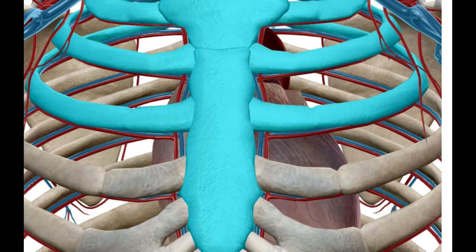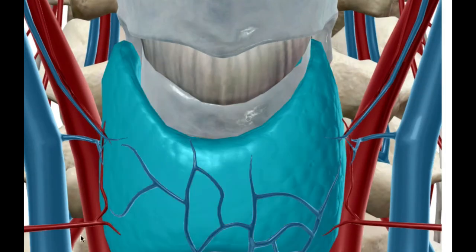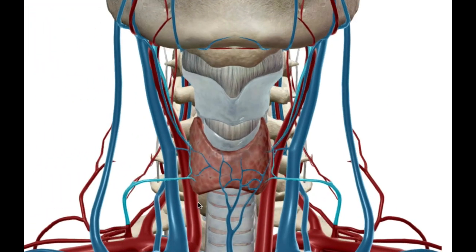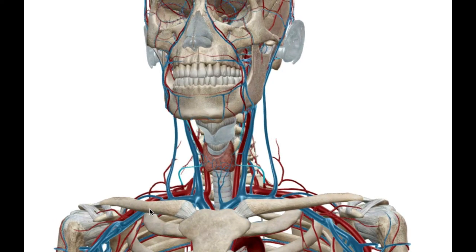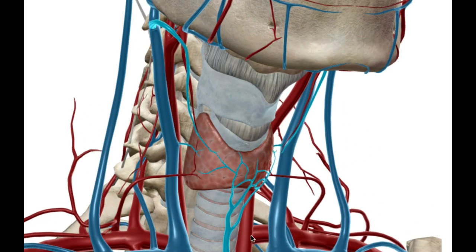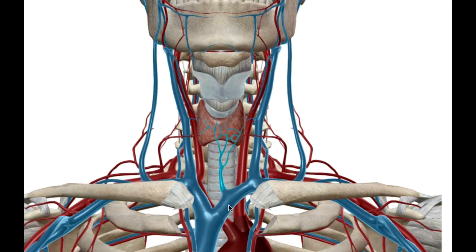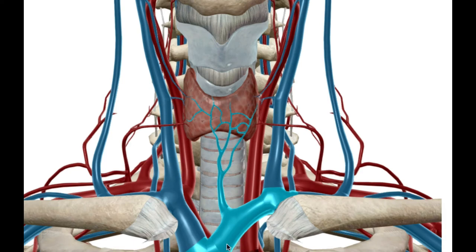The thyroid gland is fed by the inferior thyroid arteries. As you can see from their proximity to the heart, the thyroid is the first endocrine gland that gets first dibs on blood. Once the blood has been used, it drains into the thyroid veins, which drain into the brachiocephalic vein and then into the superior vena cava, and ultimately into the heart.